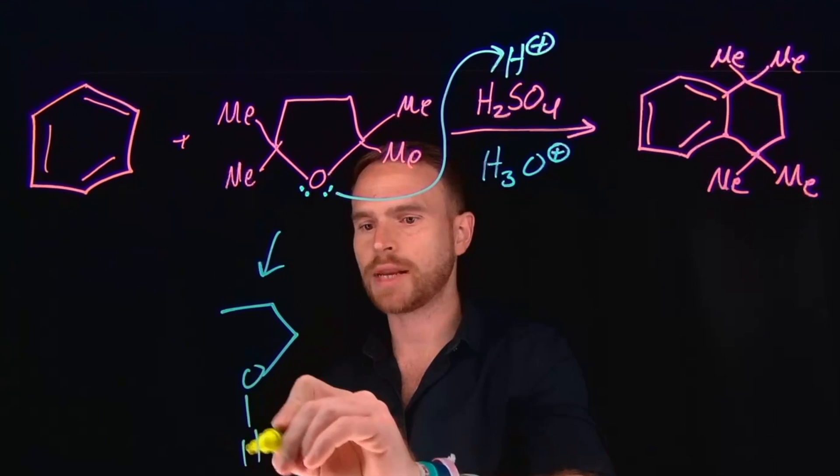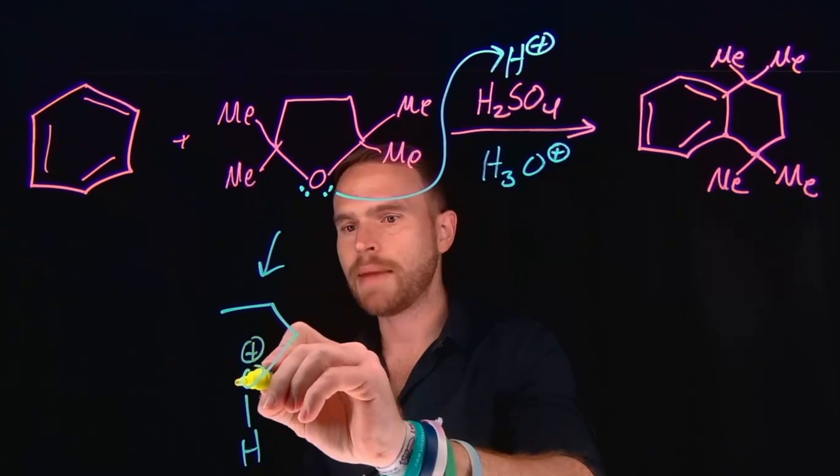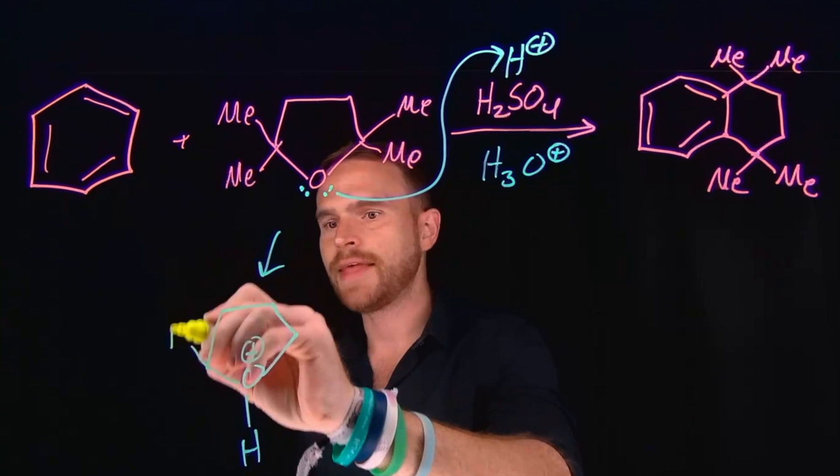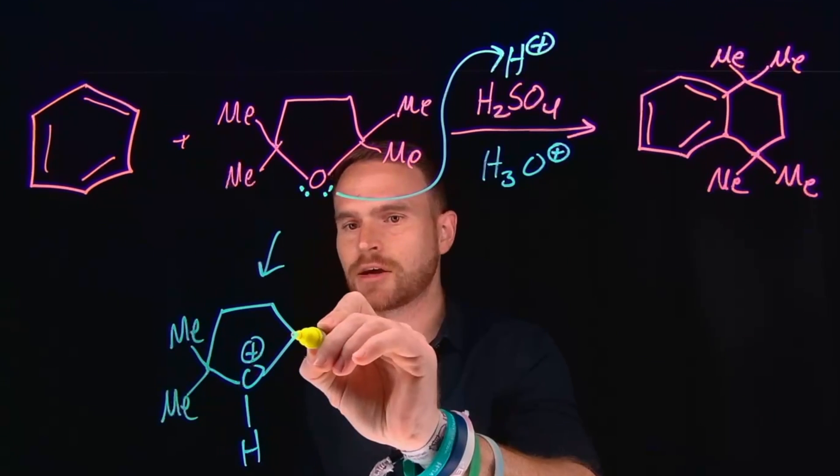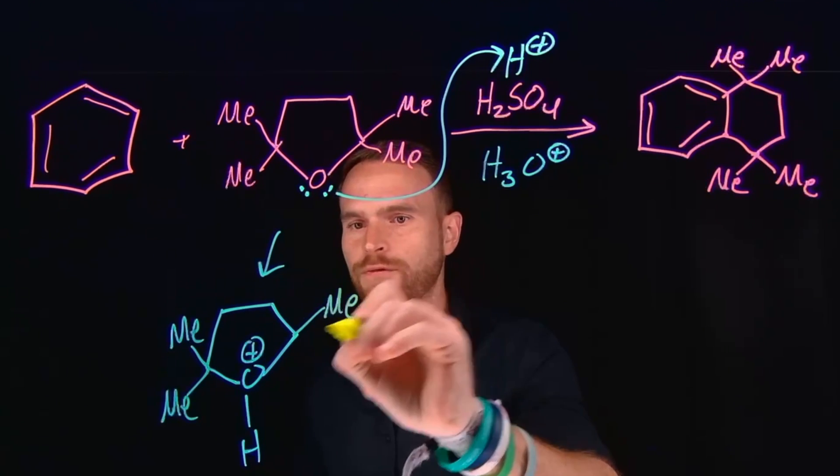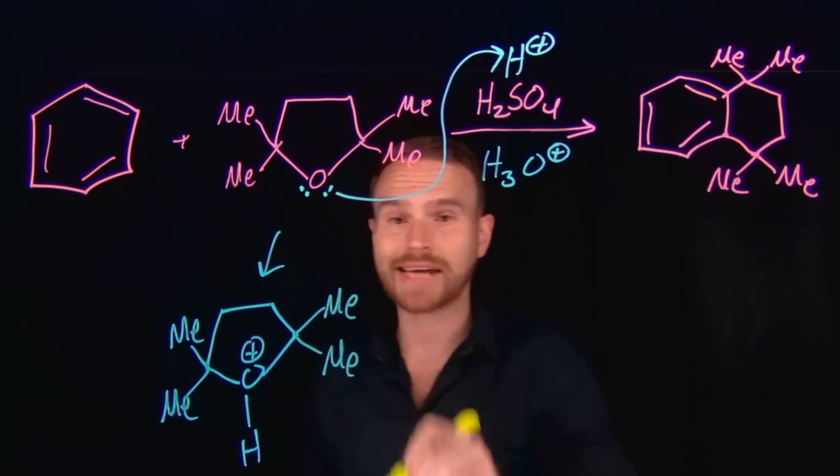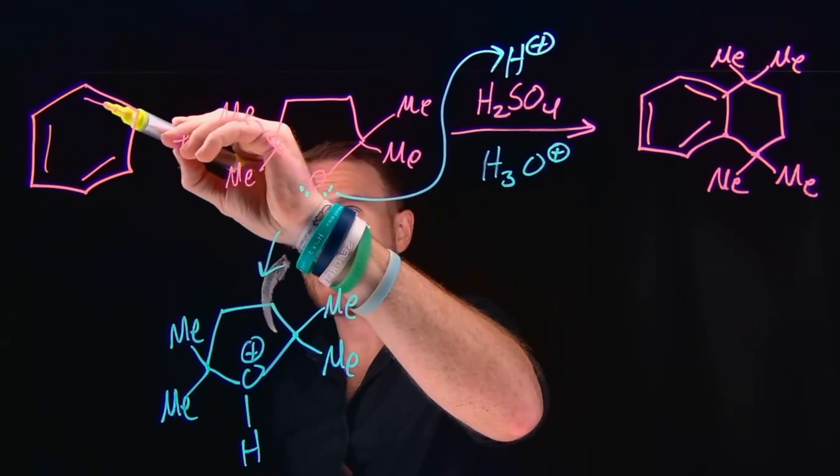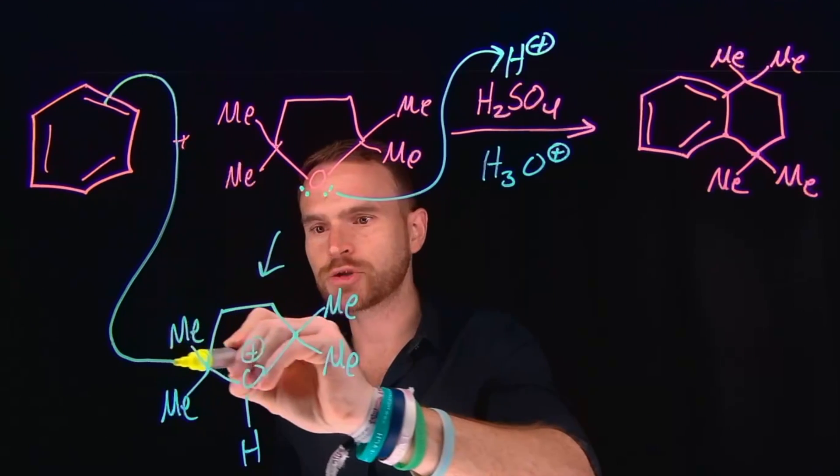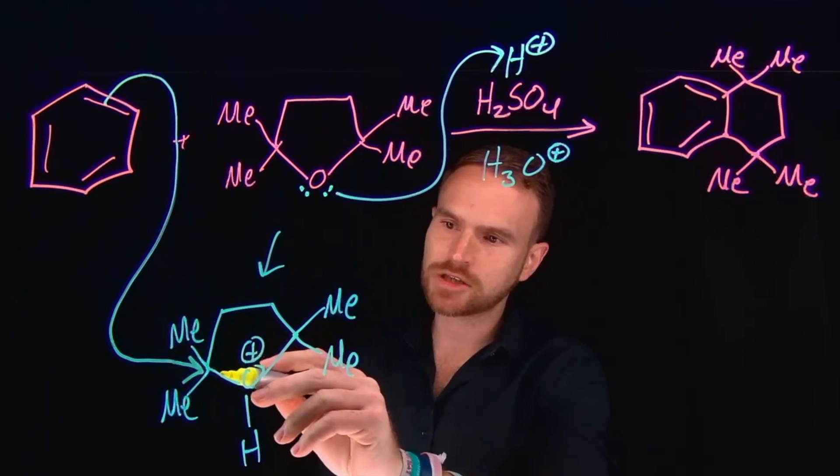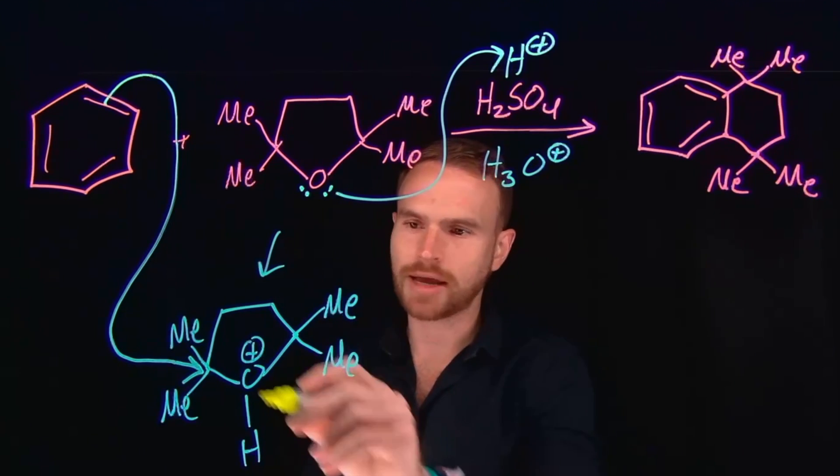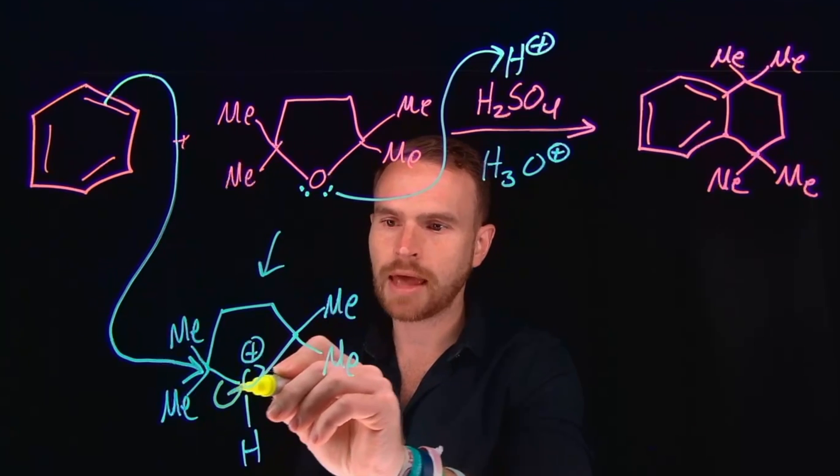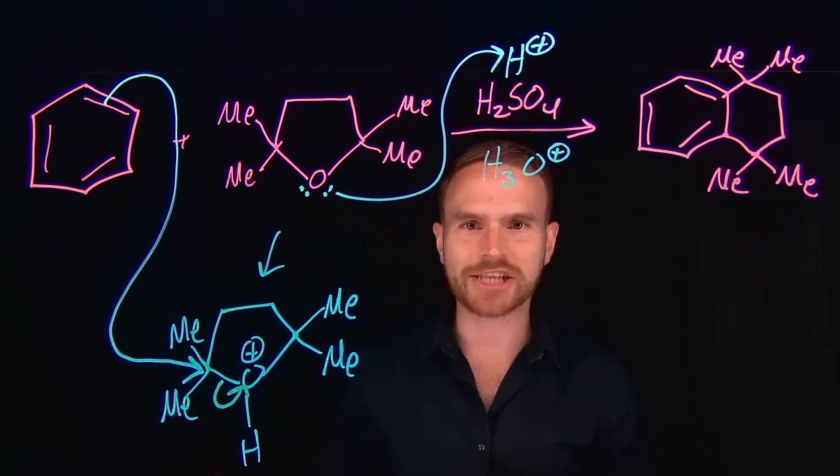Once you protonate this oxygen, you're making it positively charged, and therefore you're making the neighboring or adjacent carbons much more electrophilic and susceptible to nucleophilic attack. In that first step, we'll come and do our electrophilic aromatic substitution by attacking this carbon chain, which has been made more electrophilic by protonating this oxygen. That's going to open this ring and give us our neutral alcohol at the end of that chain.